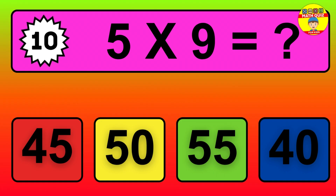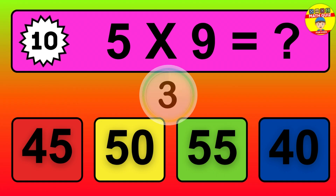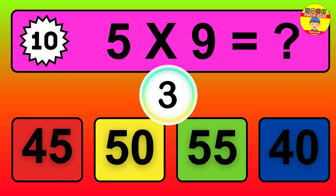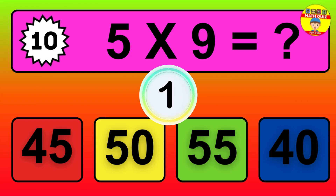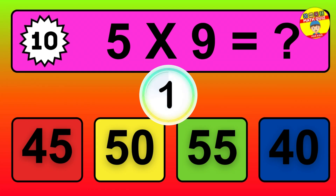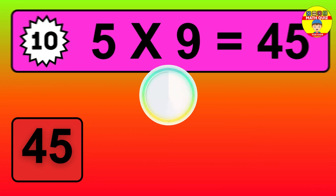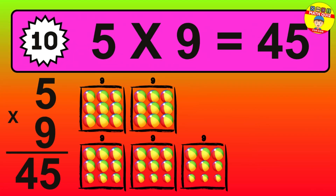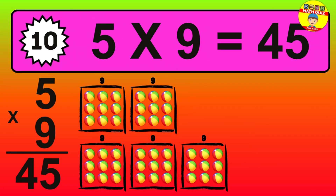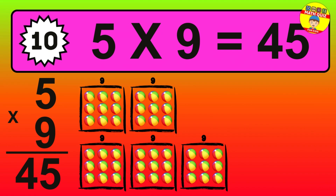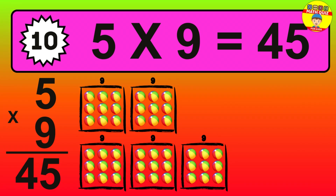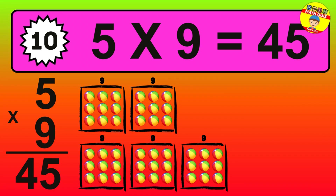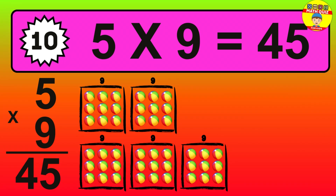Question 10. 5 times 9 equals what? The answer is 5 times 9 is 45. To calculate, we have 5 groups with 9 balls each one. So, how many balls do we have? 45 balls.